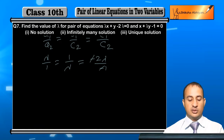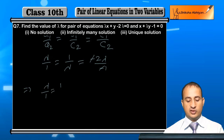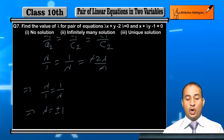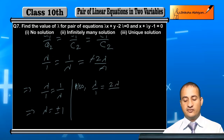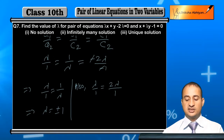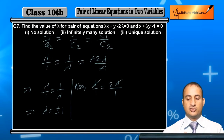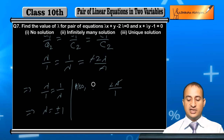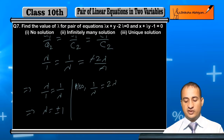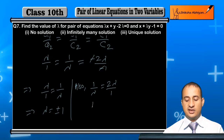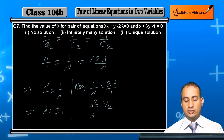From lambda upon 1 equals 1 upon lambda, lambda squared equals 1, giving lambda equals plus or minus 1. Then from 1 by lambda equals 2 lambda by 1, solving gives lambda squared equals 1 by 2, so lambda equals 1 by root 2.